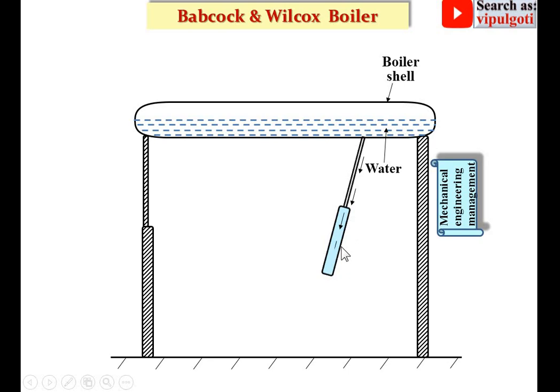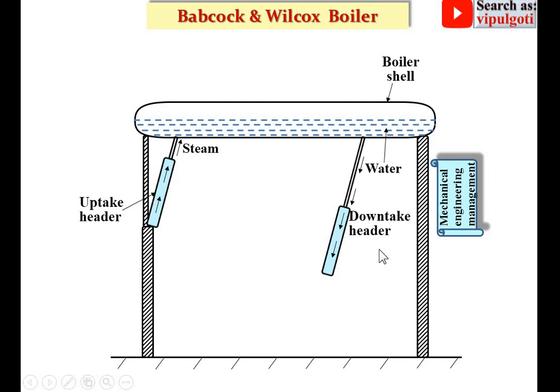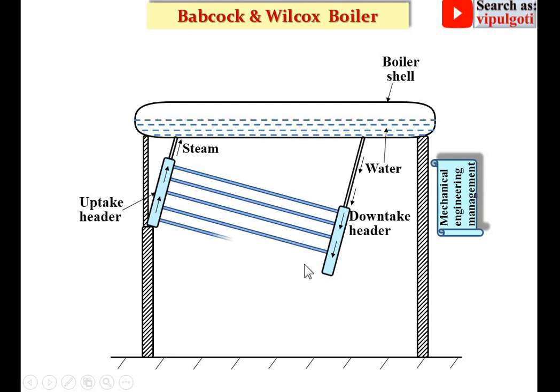This is called the downtake header and this is the uptake header. I have shown the arrow in the upward direction here and the arrow in the downward direction over here. Water is coming from these tubes from the boiler shell — that's why it is called the downtake header — and over here it is converted into steam and once again it comes to the boiler shell in the upward direction, that's why it is called the uptake header. Both the uptake header and downtake header are joined by tubes.